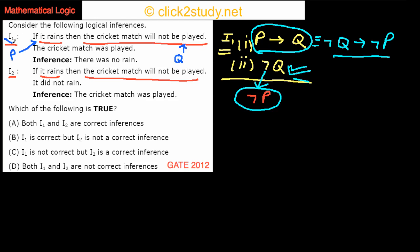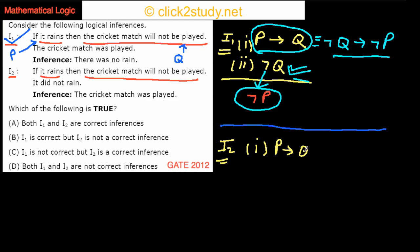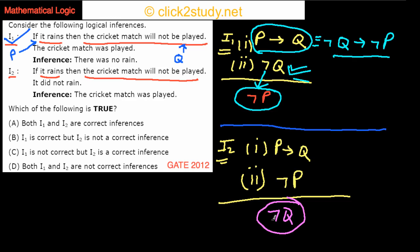Now for I2, the first part is the same: P implies Q. But this time, what is given to us is not-P — it did not rain. The question is: can we infer not-Q, that the cricket match was not played? From P implies Q, can we say not-P implies not-Q? No, you cannot. From not-Q you can imply not-P, but from not-P you cannot imply not-Q.